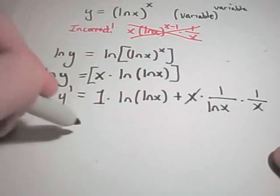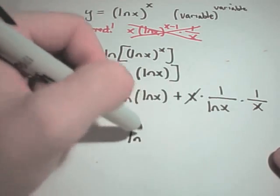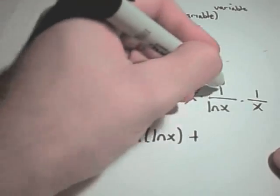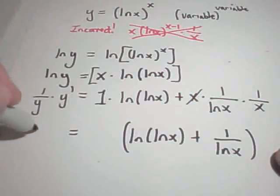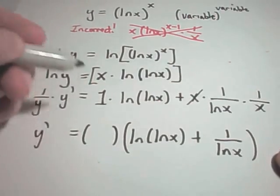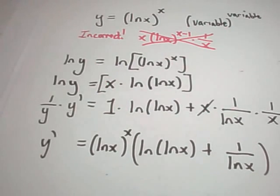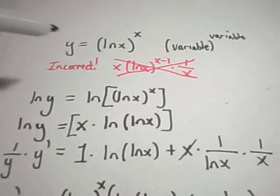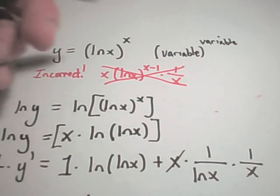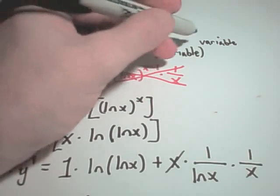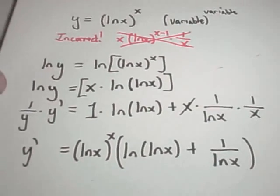I can cancel the x's, so on the right side I'm left with ln of ln of x plus one over ln of x. Then I multiply both sides by y, substituting the original expression — ln of x raised to the x power — for y. Notice that this answer looks very different from the incorrect method, so be careful. When you see a variable on the inside raised to a variable power, that's when you need logarithmic differentiation.